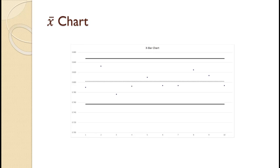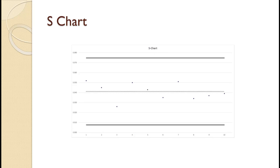The slide shows the resulting X-bar chart. It uses the control limits we computed earlier. Notice that the process appears completely in control with no points near either control limit, although the means are more spread out in this example than they were in the first example. The slide shows the resulting S chart. As with the X-bar chart, everything appears to be within control.